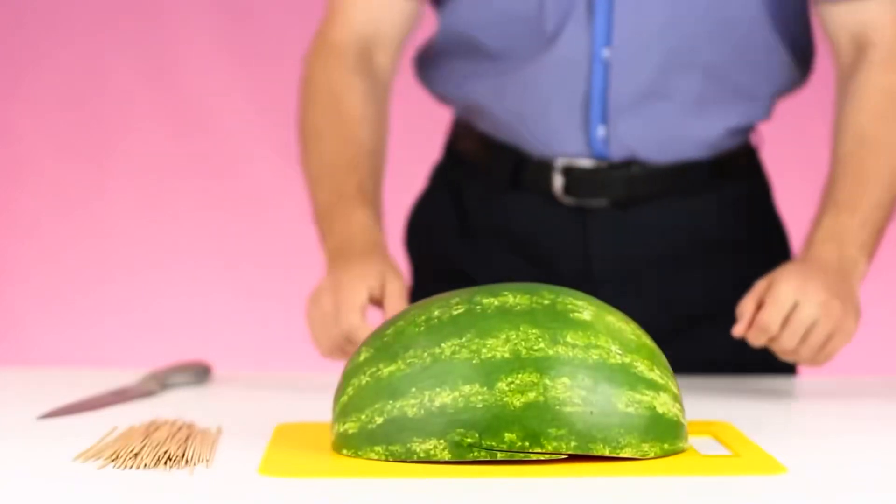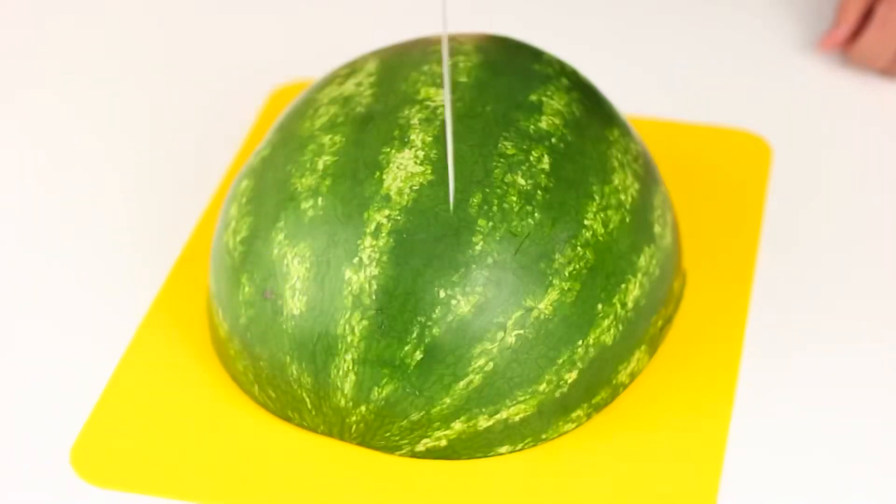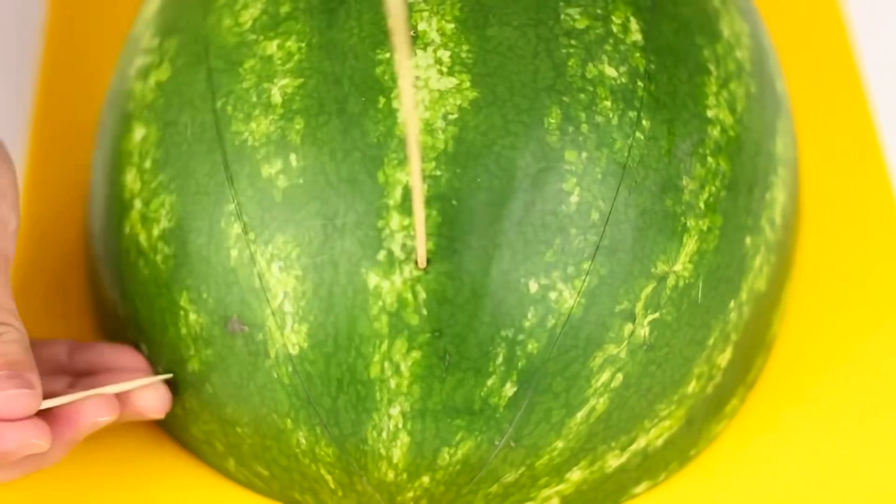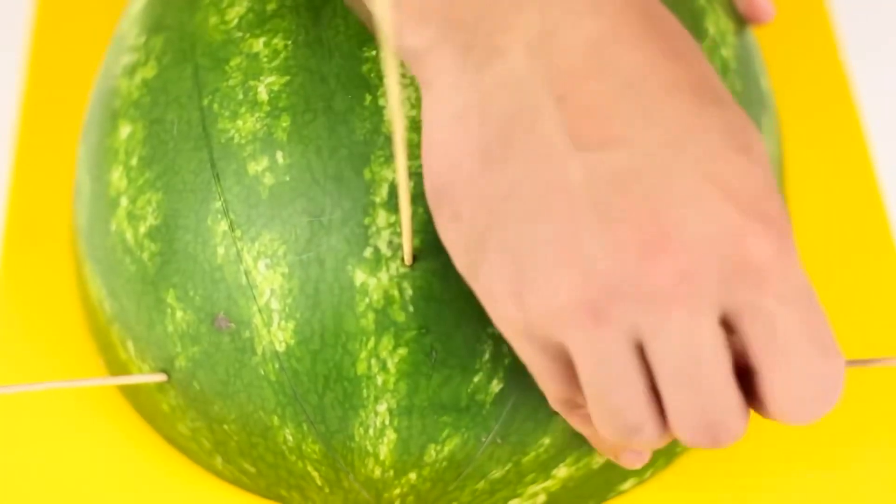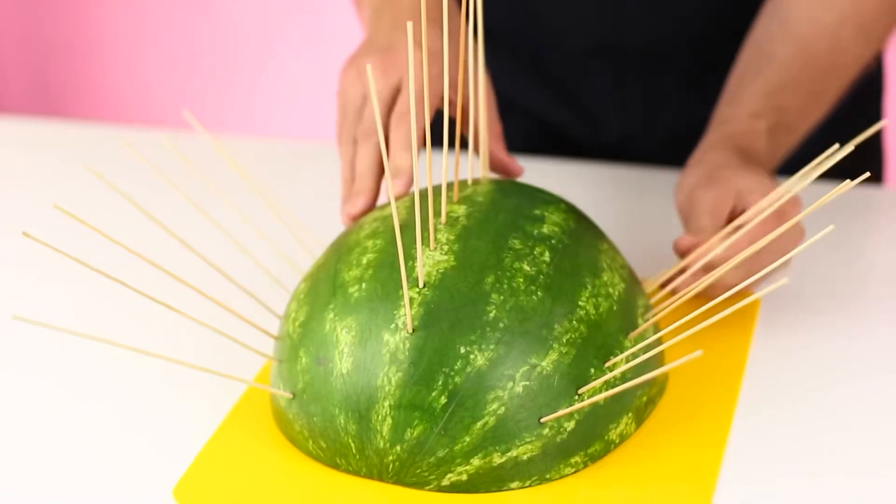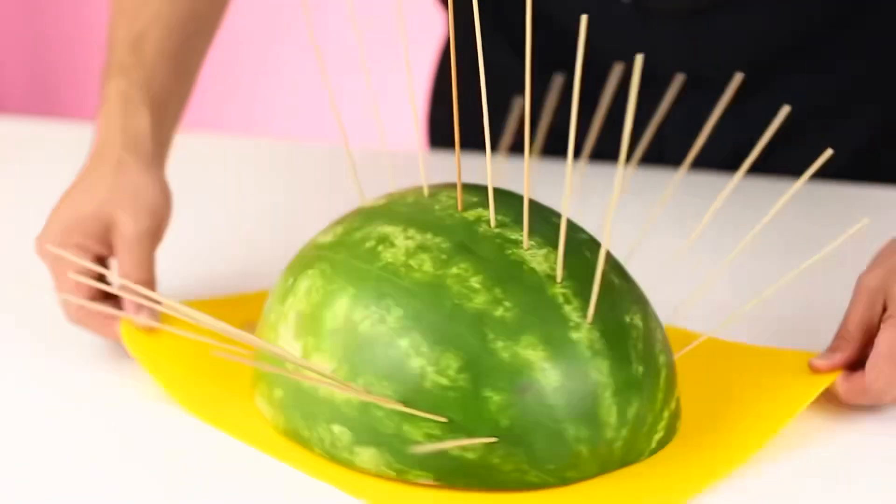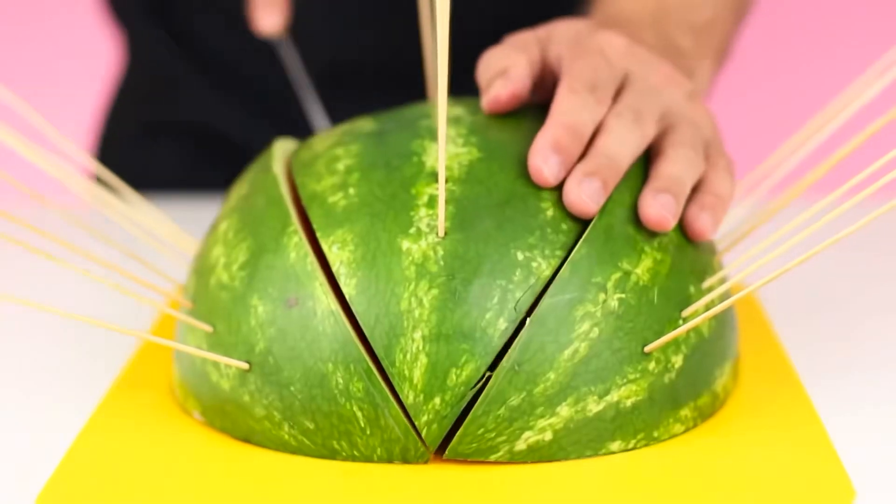For the fifth method, take half of the watermelon and divide it lengthwise into three parts. Stick skewers along each of the three parts. We will make incisions across so that each skewer has its own piece.